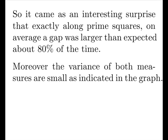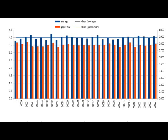Moreover, the variance of both measures are small, as indicated in the graph. So here you see, this is the average over the 501 samples, and it's approximately 4. And it also has very little variance, all things considered.